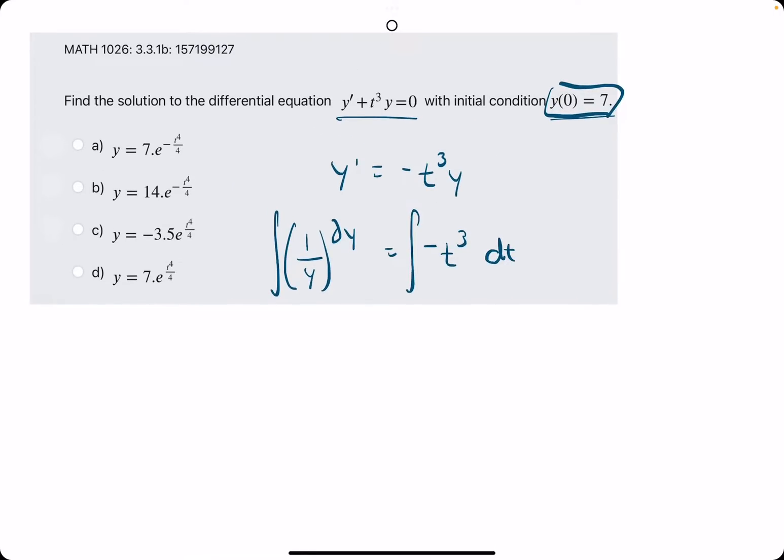So we are now taking the integral of both sides. So ln of y, absolute value, and then reverse power rule. We want to add one and divide by whatever that new value is that we get, and we'll add plus c.